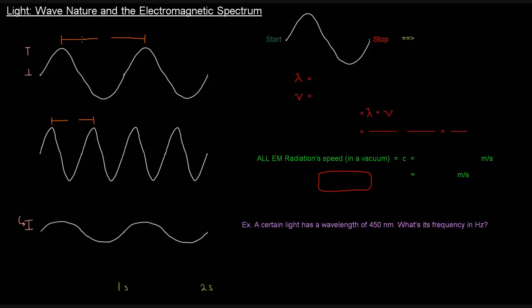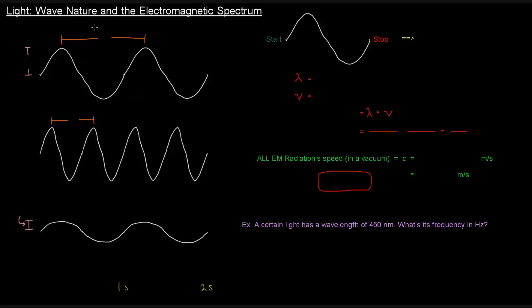Okay, so we mentioned that light has wave-particle duality. Here we're going to talk a little bit about the wave nature of light, and we're also going to talk about the electromagnetic spectrum.